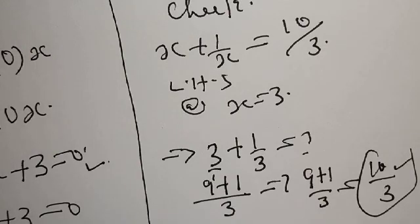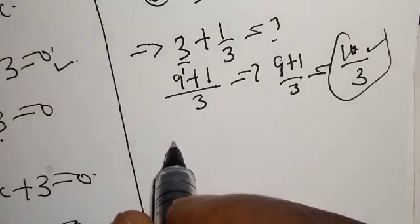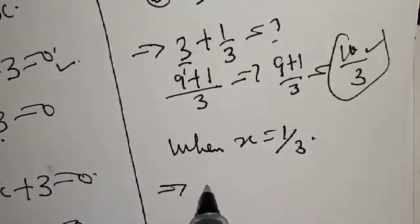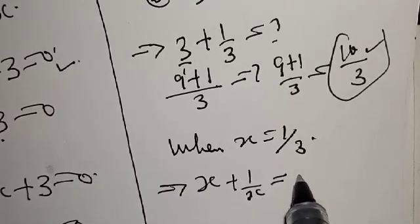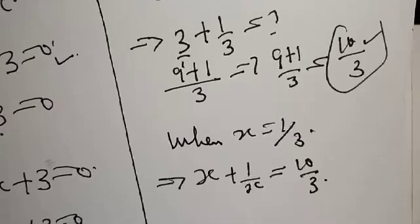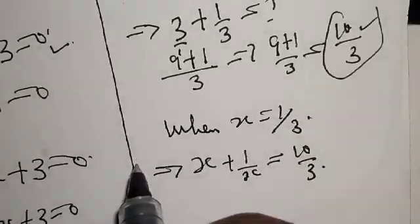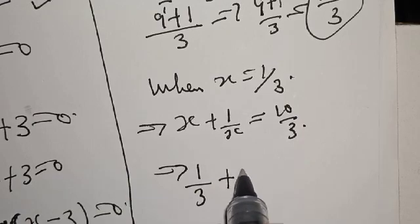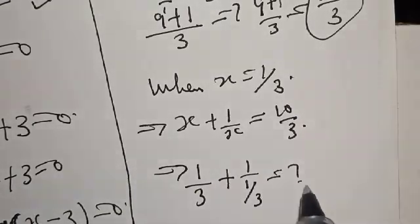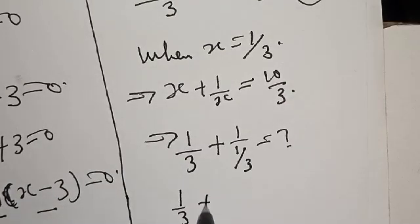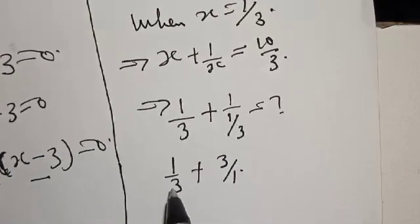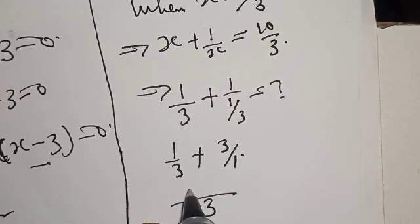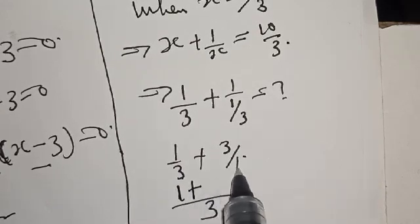Now let's also check at x equal to 1 over 3. We have 1 over 3 plus 1 divided by 1 over 3, which equals 1 over 3 plus 3. The LCM is 3, so this becomes 1 over 3 plus 9 over 3, which equals 10 over 3. This also confirms our answer.